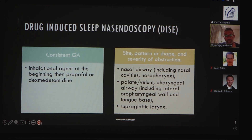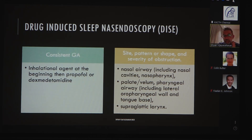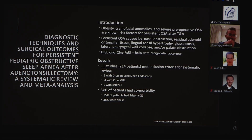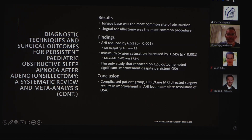For drug-induced sleep nasendoscopy, the most important thing is to have a consistent plan — an inhalational agent at the beginning, followed by propofol or dexmedetomidine, then assess the airway adequately. The most commonly used system is the VOTE system: velum, oropharynx, tongue base, and epiglottis, scored from zero to three. In patients who fail adenotonsillectomy and who have DISE or cine MRI, almost half will have some comorbidity — approximately 40 percent will be obese. The tongue base is the most common site of airway obstruction. Lingual tonsillectomy was the most common procedure performed in this meta-analysis, with significant reduction in OAHI.